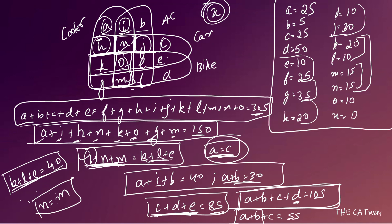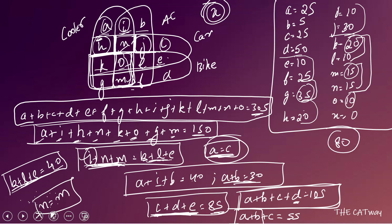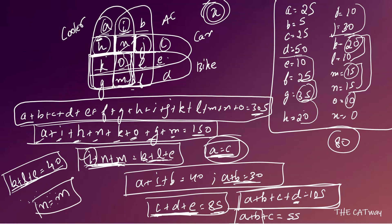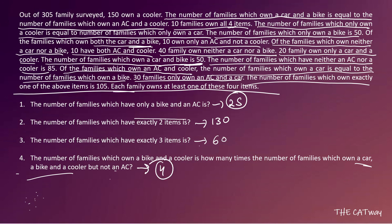Question 4: how many times is bike-and-cooler families compared to car-bike-cooler but not AC families? Bike and cooler covers K, O, G, M: 20 + 10 + 35 + 15 = 80. Car, bike, and cooler but not AC is region K = 20. So 80 ÷ 20 = 4 — it is 4 times. That completes set 9. Practice the given questions and you should now be able to solve all Venn diagram problems easily.